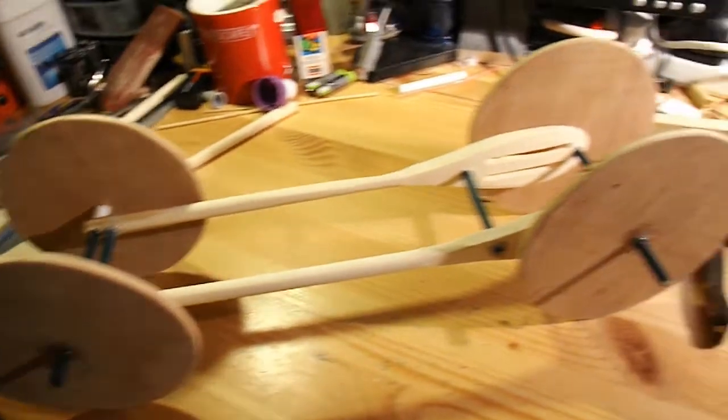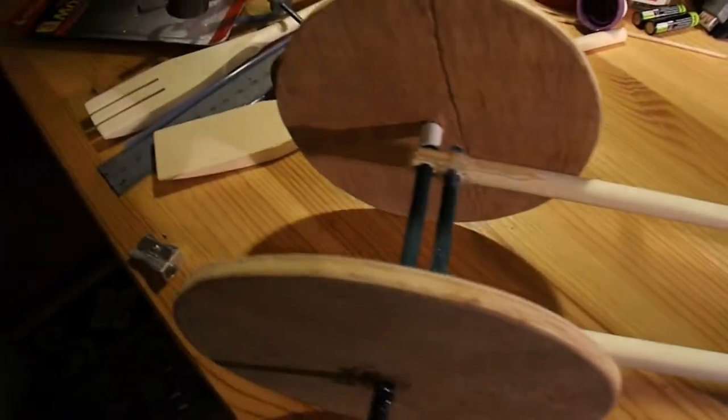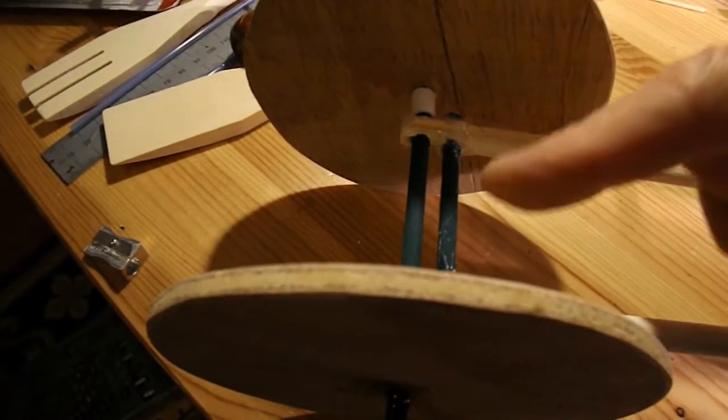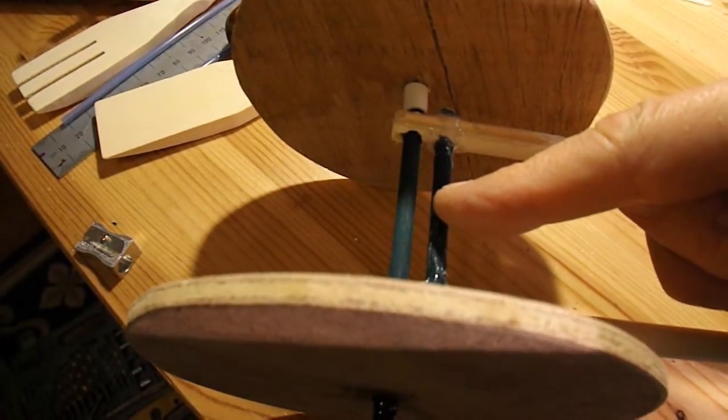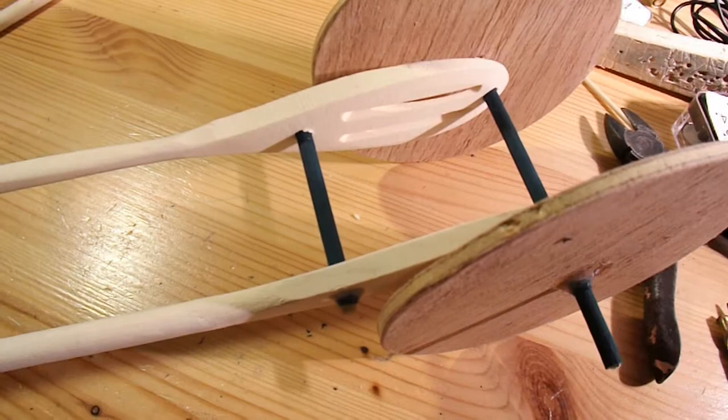Right, that's the wheels in place on the axles. Just need to put a bit of tire rubber band round there, and a hook on the back axle, and we can go and do a test run.